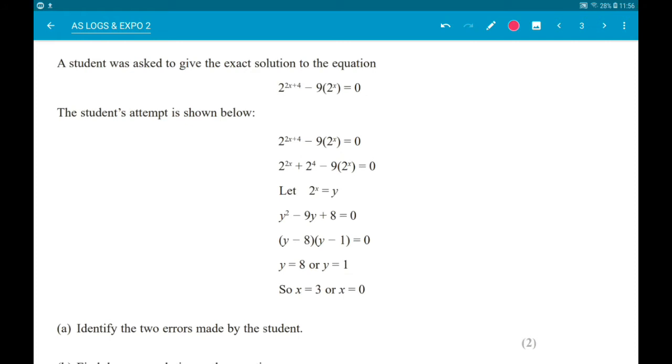Ok, so they started by writing the equation down. Good, first move. In the second line, 2 to the 2x add 4, that's become 2 to the 2x add 2 to the 4. That isn't right. So there's our first error.